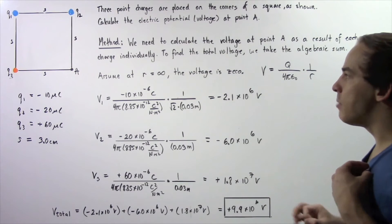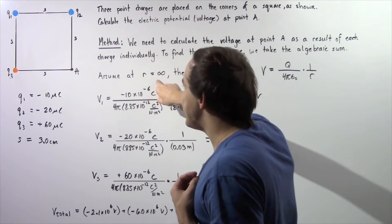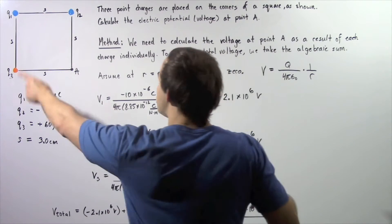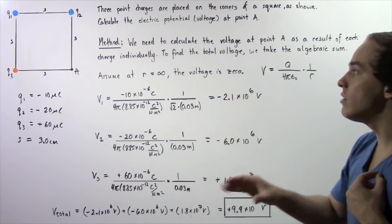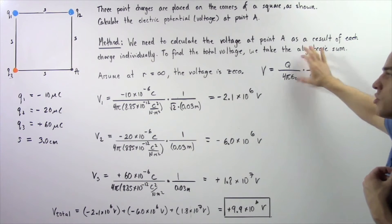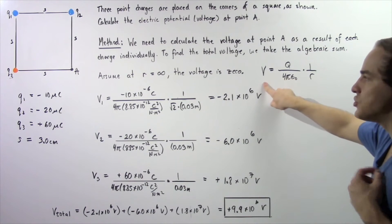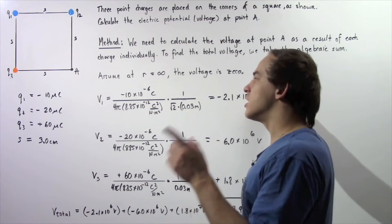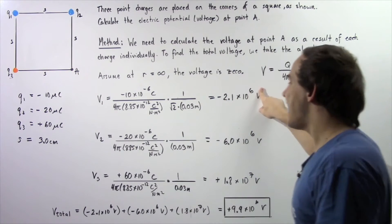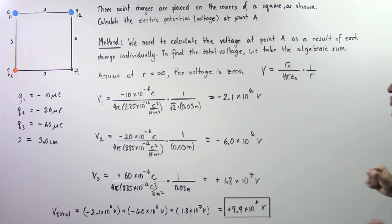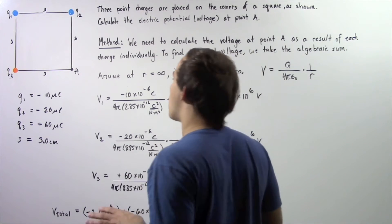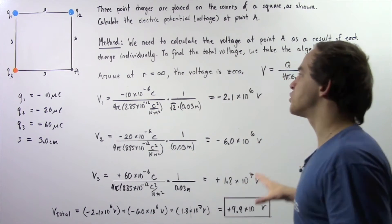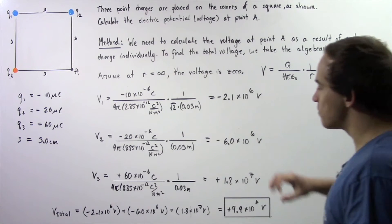We begin by assuming that at a distance infinitely far away from these point charges, the voltage is zero, and that allows us to use the following equation. This equation gives us the voltage, the electric potential, near a stationary point charge, where R is the distance between that particular point charge and the point at which we're examining the voltage.